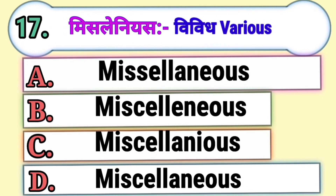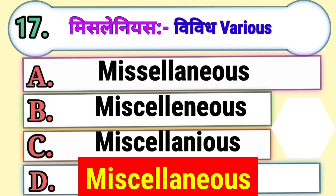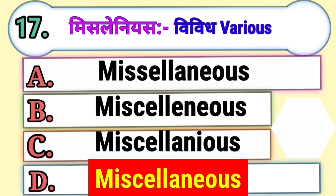Question 17. Miscellaneous means Vivid or Various. Choose the correct spelling of miscellaneous. Option A, Option B, Option C, or Option D. The correct answer is Option D, Miscellaneous.